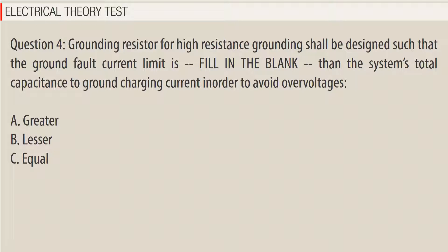Question 4: Grounding resistor for higher resistance grounding shall be designed such that the ground fault current limit is _____ than the system's total capacitance to ground charging current in order to avoid overvoltages. A. Greater, B. Lesser, C. Equal. Answer: A.